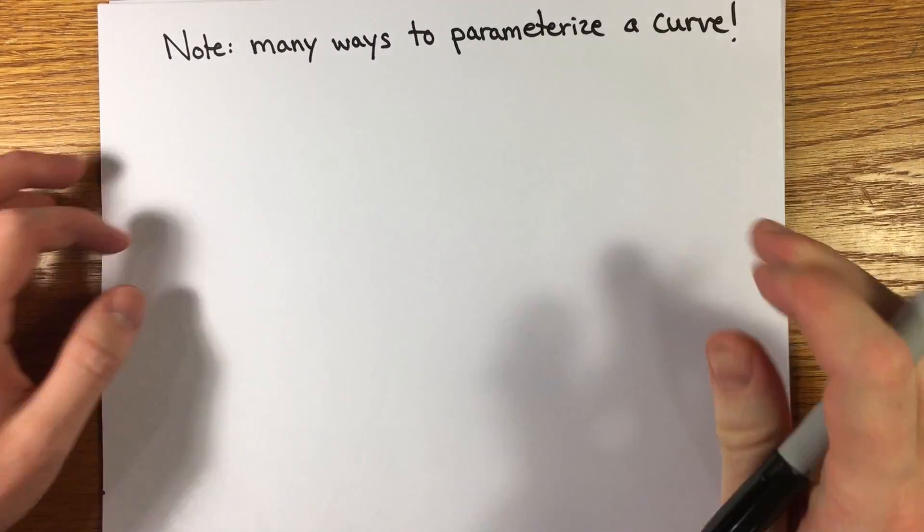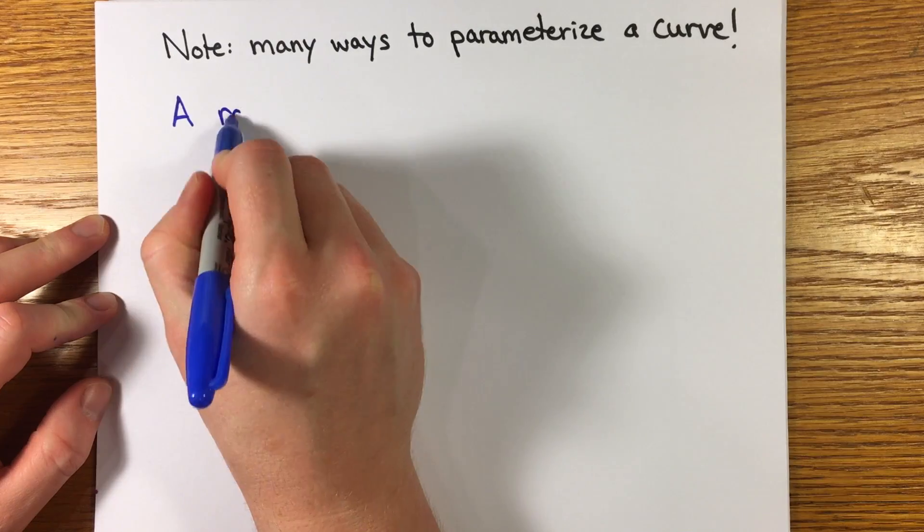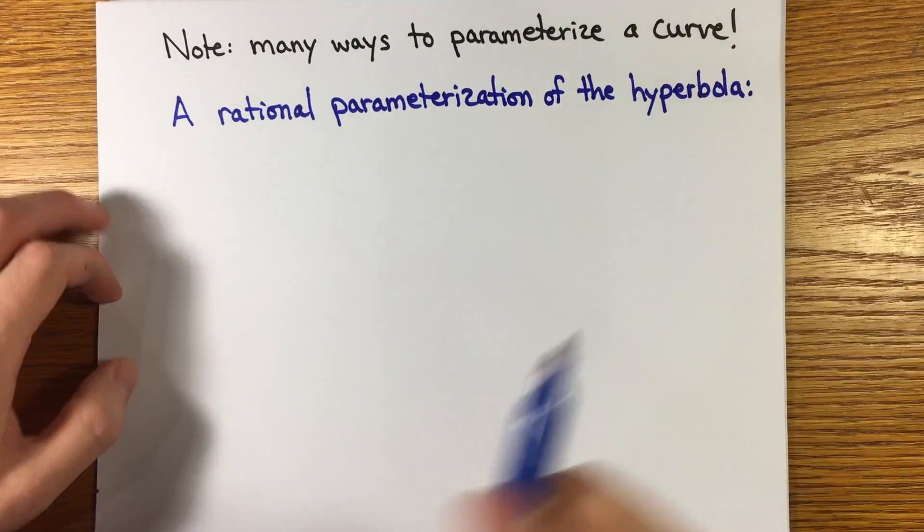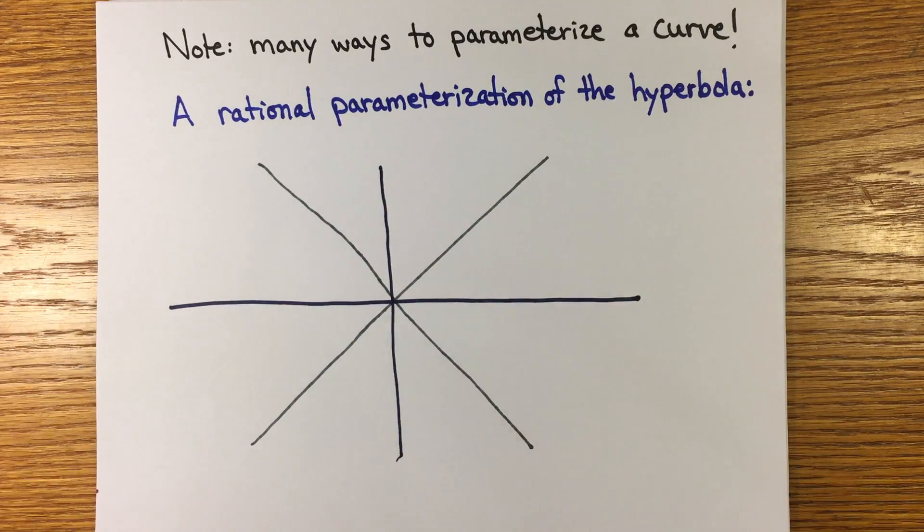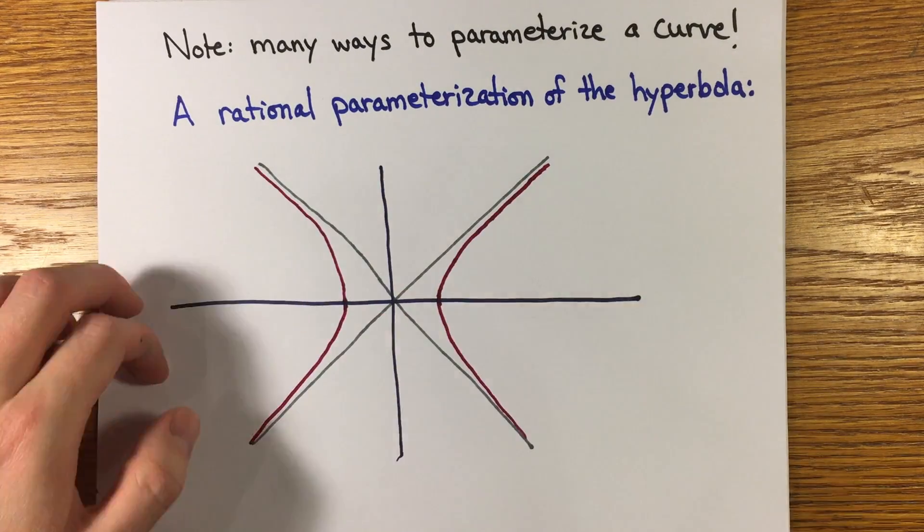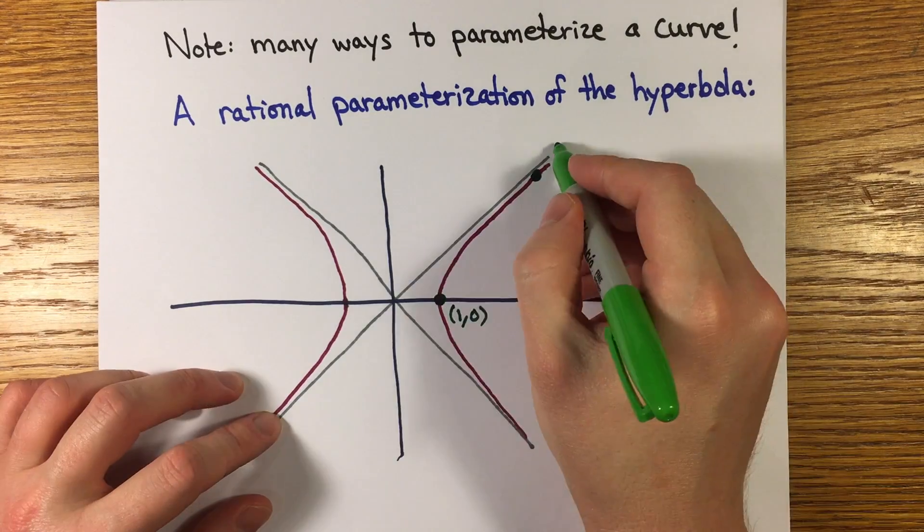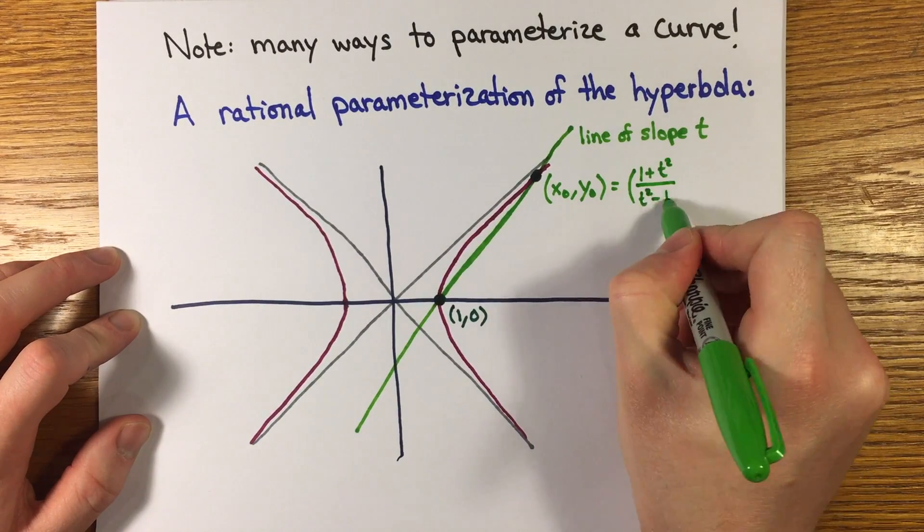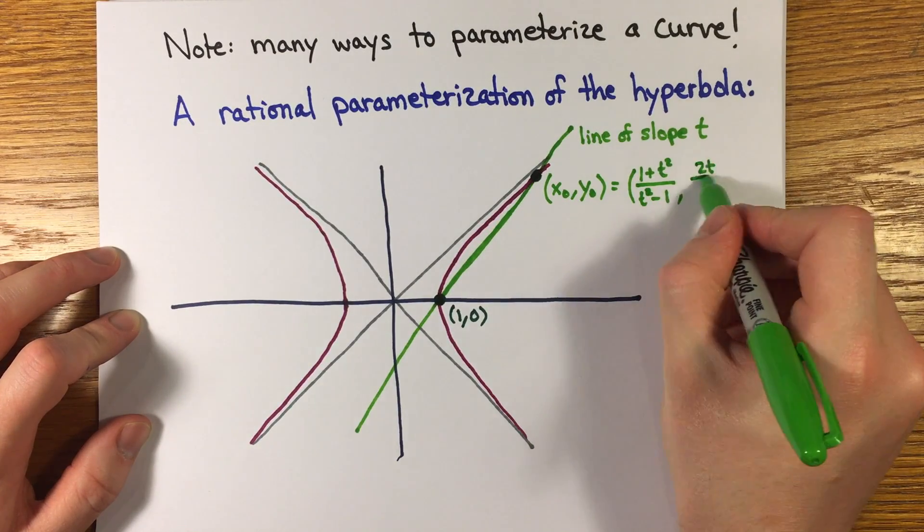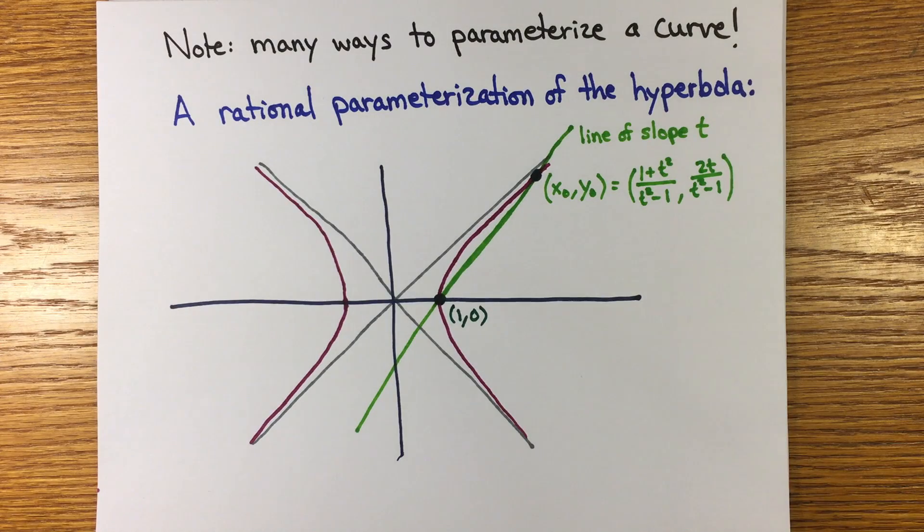Now this algebraic relationship alone does not characterize the hyperbolic trig functions. It's important to remember that there are many ways to parametrize a curve. For example, if you pick a point on the hyperbola x squared minus y squared equals 1, say the point 1 0, and take any line through 1 0 with slope t, that line will intersect the hyperbola and the point with coordinates 1 plus t squared over t squared minus 1 comma 2t over t squared minus 1. This gives a parametrization of the hyperbola by rational functions.